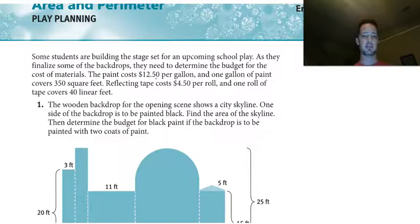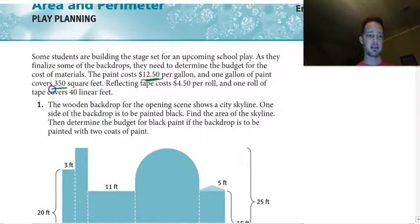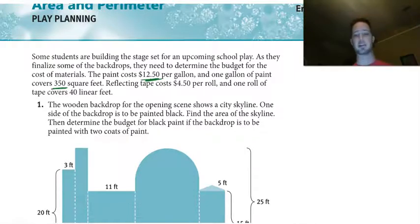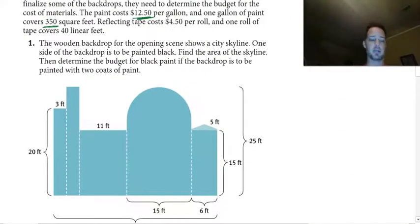The students are creating a backdrop for a play. They need to figure out the area of all these shapes so they can determine how much it's going to cost. Paint costs $12.50 per gallon and each can covers a certain number of square feet. We need to figure out the total square feet to calculate the painting cost. A lot of these shapes are basic, so rectangles should be easy.